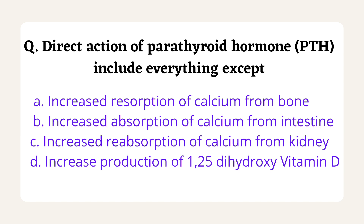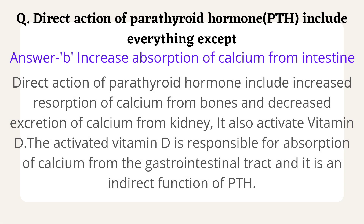The correct answer is option B, increased absorption of calcium from intestine. The direct actions of parathyroid hormone are: it increases reabsorption of calcium from the bones and decreases excretion of calcium from the kidney. The indirect action is that parathyroid hormone activates vitamin D, and the activated vitamin D — also called 1,25-dihydroxycholecalciferol — increases absorption of calcium from the gastrointestinal tract. Therefore, increased absorption of calcium from the intestine is an indirect function of parathyroid hormone, not a direct one.